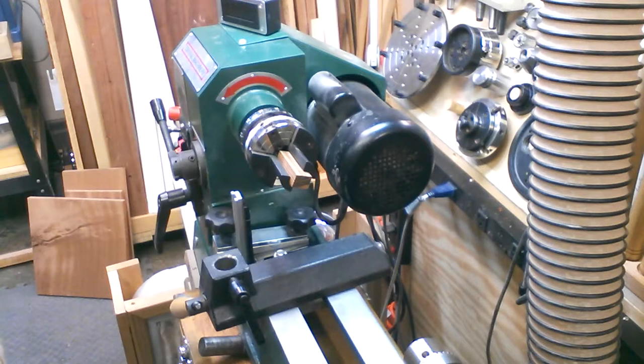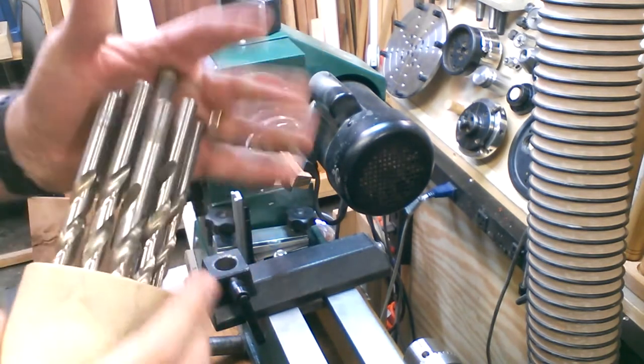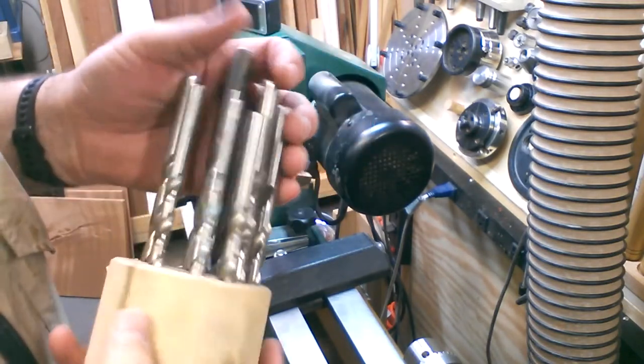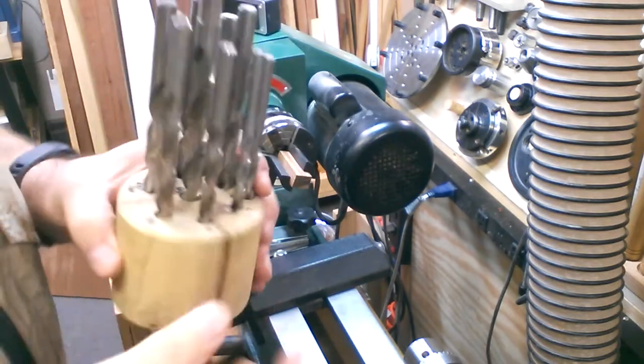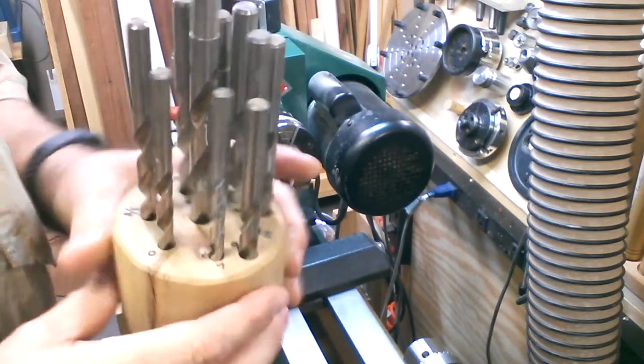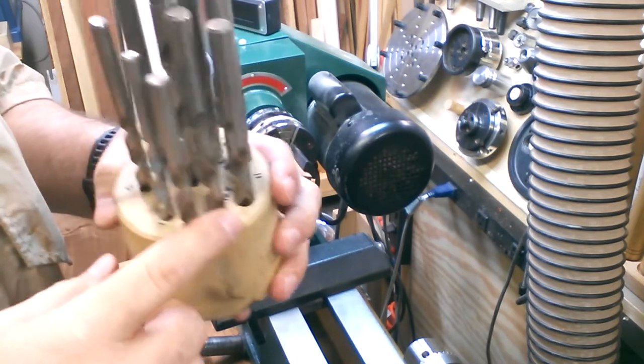This kit wants a 7mm drill bit for those tubes. I have a set of pen makers drill bits that I picked up from Woodcraft. And all I've done is I've actually just drilled out a block with each one to make for easy storage. And then I've identified which is which.